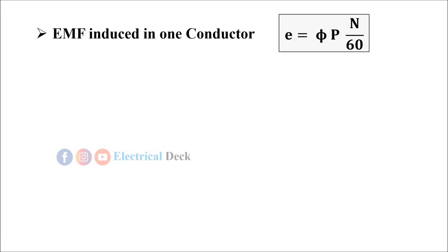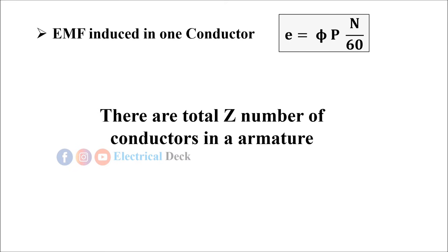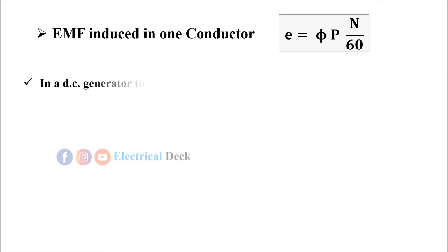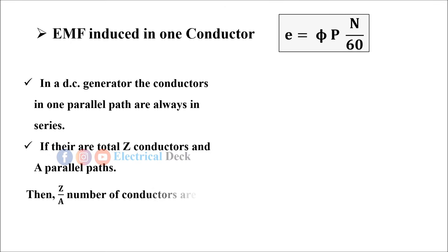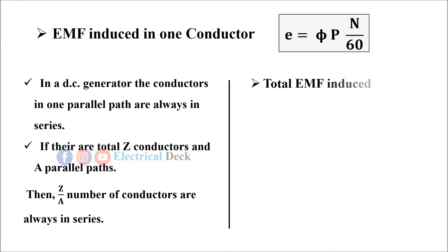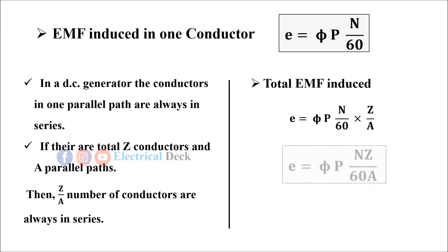Now we know the equation for EMF induced per conductor — that is, the EMF induced in only one conductor. There are a total of Z conductors in the armature, but in a DC generator the conductors in one parallel path are always in series. If there are total Z conductors and A parallel paths, then Z/A conductors are always in series. Therefore, the total EMF induced in a DC generator is given by: E = φPNZ / (60 × A).